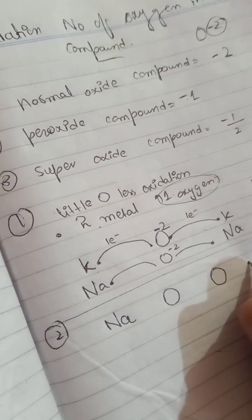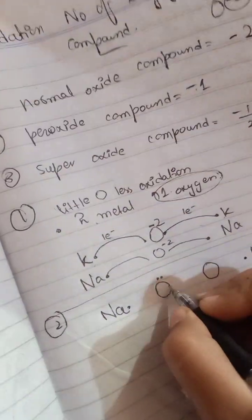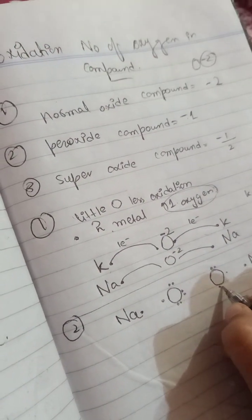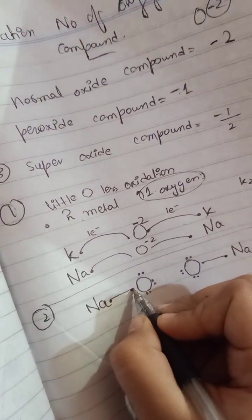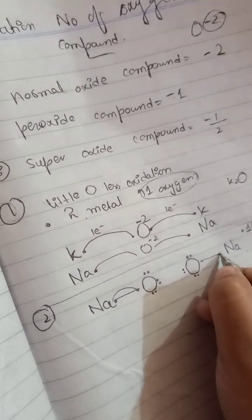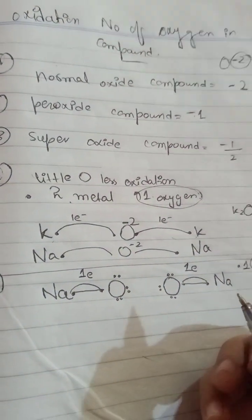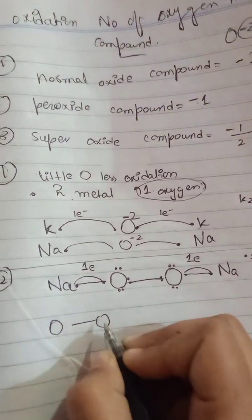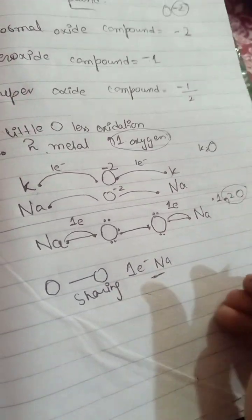In sodium peroxide, sodium has one electron in its outer shell and here also one electron. Each sodium gives one electron to an oxygen. But there is one more oxygen that also needs an electron, so the two oxygens share with each other. This oxygen-to-oxygen sharing means the oxidation number is not fully developed through electron gain — only one electron is gained from sodium.